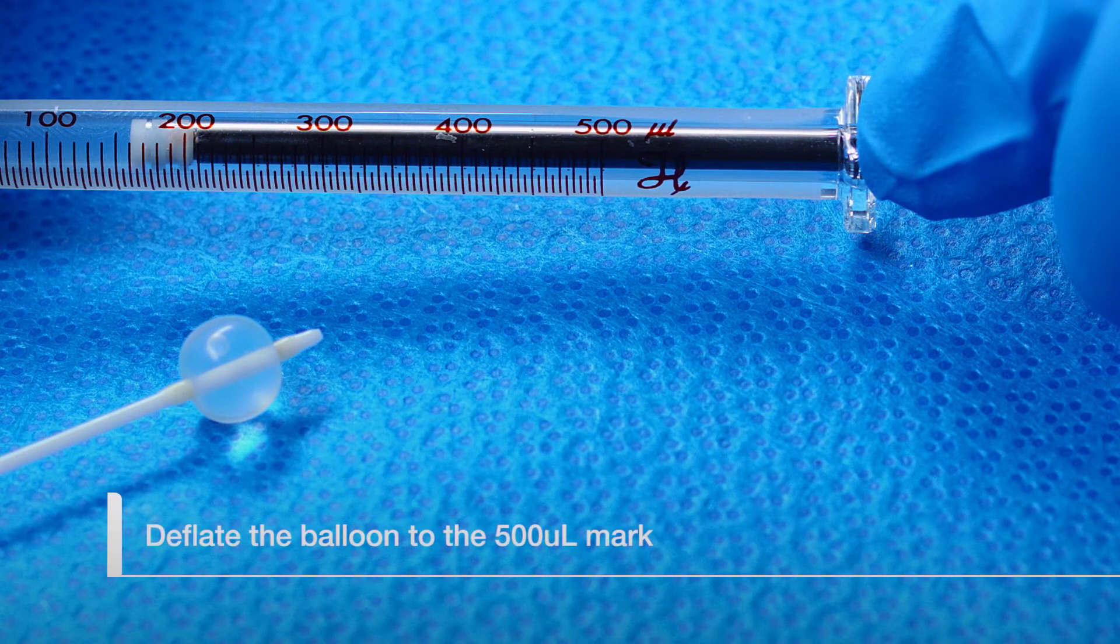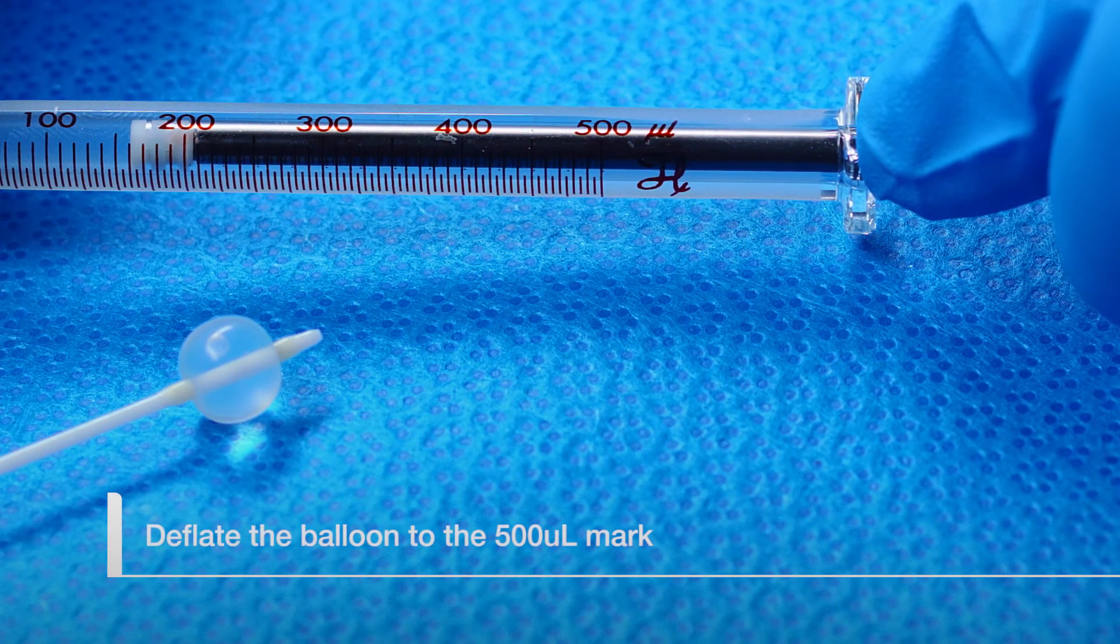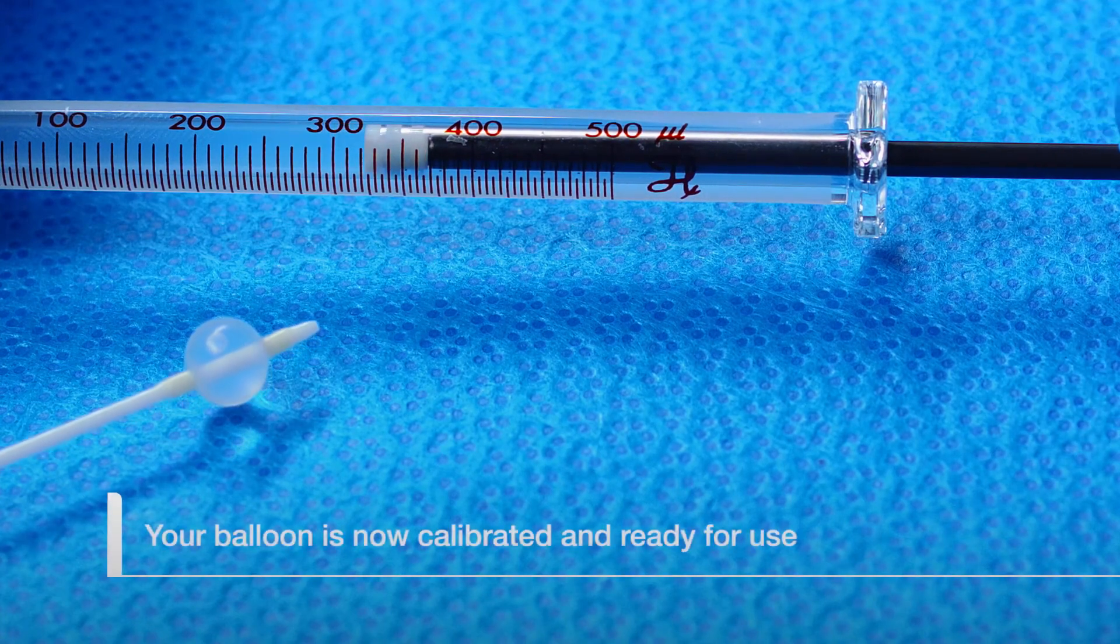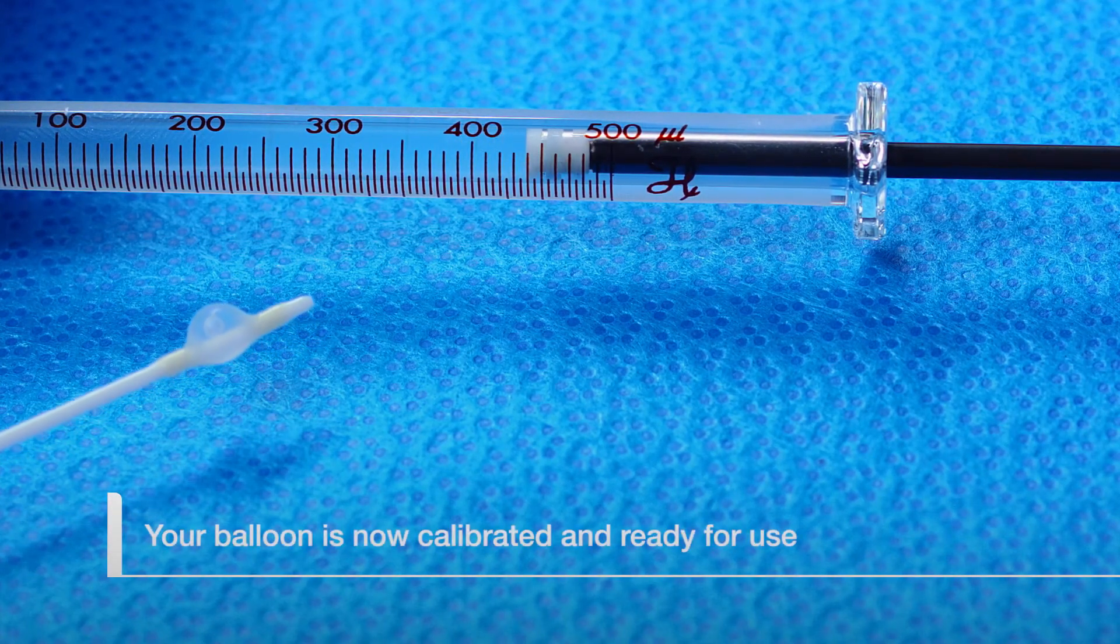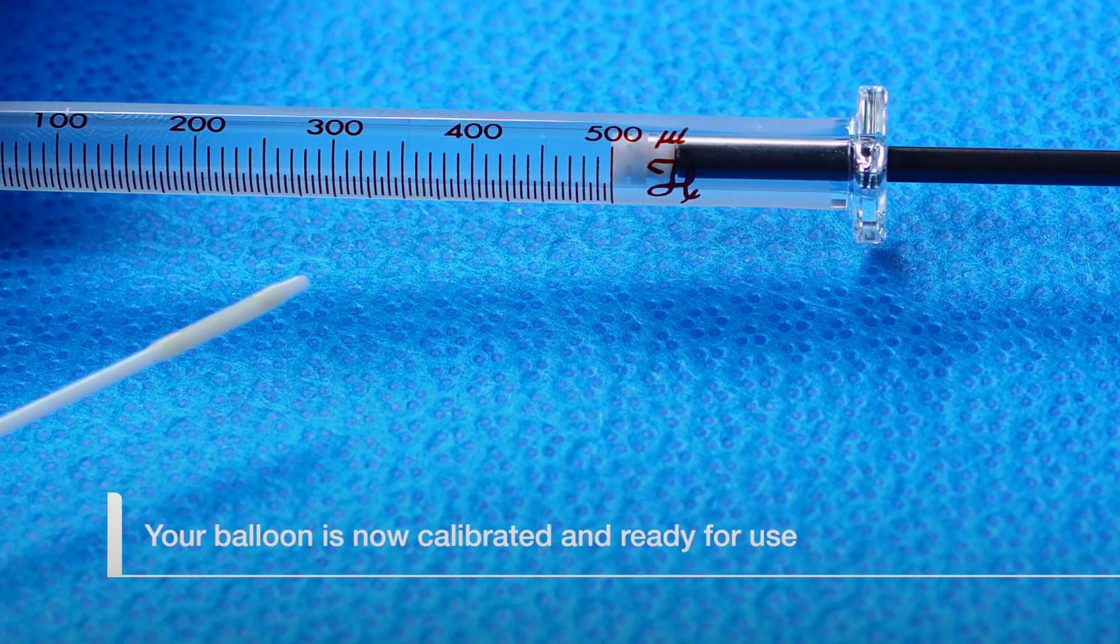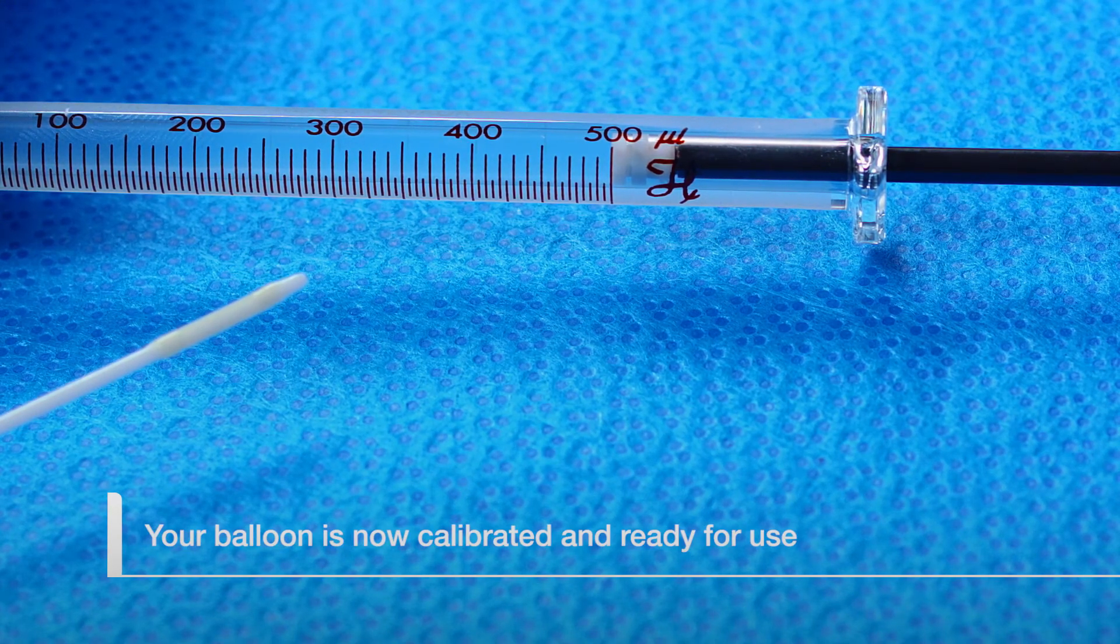Fully deflate the balloon by returning the plunger to the 500 microliter mark. Your balloon catheter is now ready to be used with the Spiration valve system. Cover the balloon with the light-proof cover and place it in a safe, clean area until ready to use in the airway.